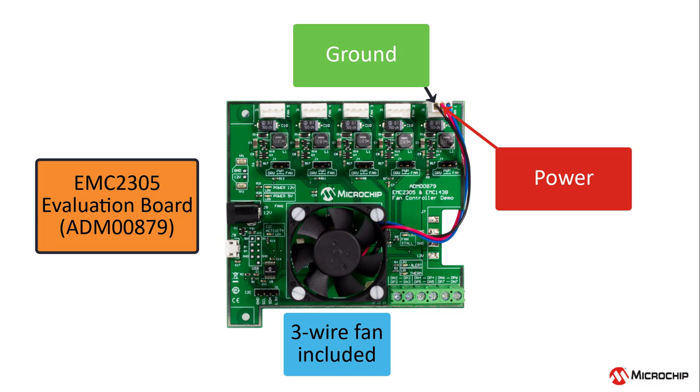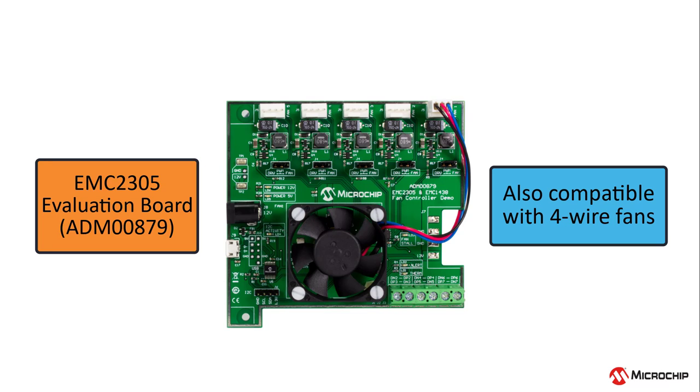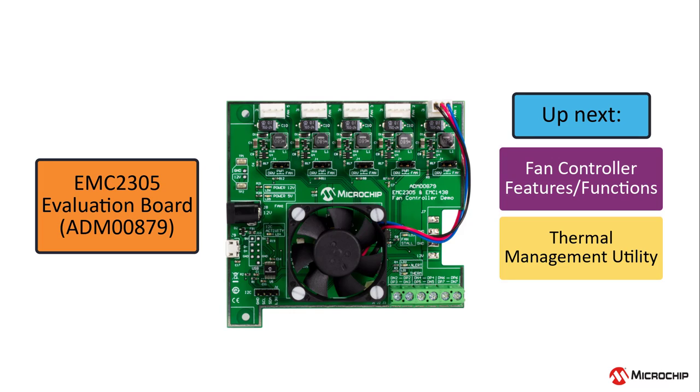The ADM-00879 comes with a three-wire fan where the black wire goes to ground, the red wire to the driver circuitry, and the blue wire is the TAC signal from the fan. However, the onboard fan driver circuitry can be bypassed, making it compatible with four-wire fans as well. In our next few videos, we'll talk about this evaluation board and its associated graphical user interface in more detail. We'll use this board to help explain the necessary hardware and firmware and many of Microchip's fan controller features.